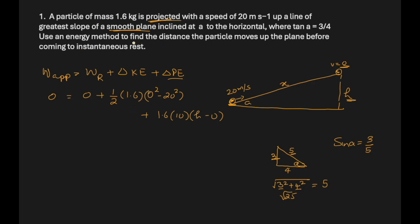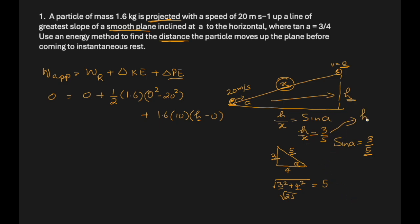Since h/x = sin a, we get h/x = 3/5, so h = 3x/5. Substituting into the energy equation: 0 = 0.8 × (−400) + 16 × (3x/5). This gives −320 + (48x/5) = 0.